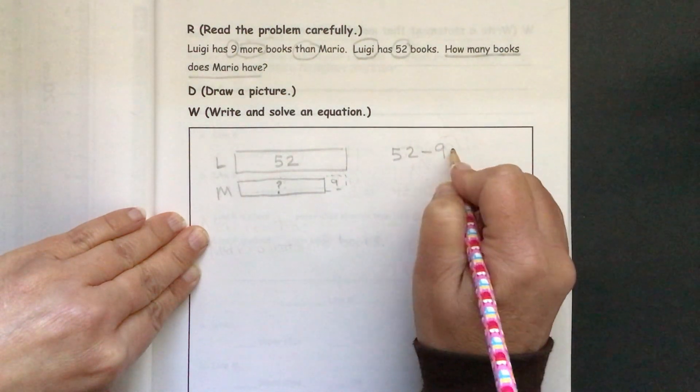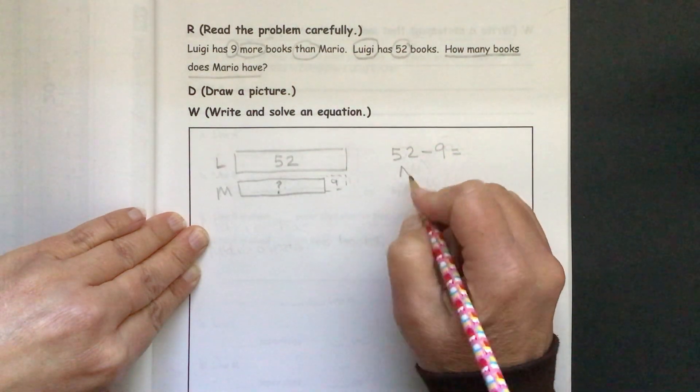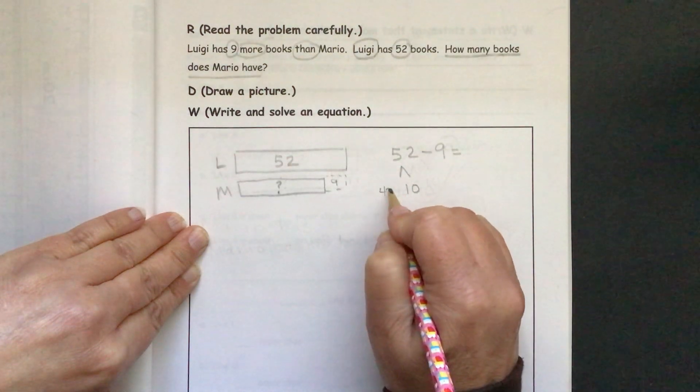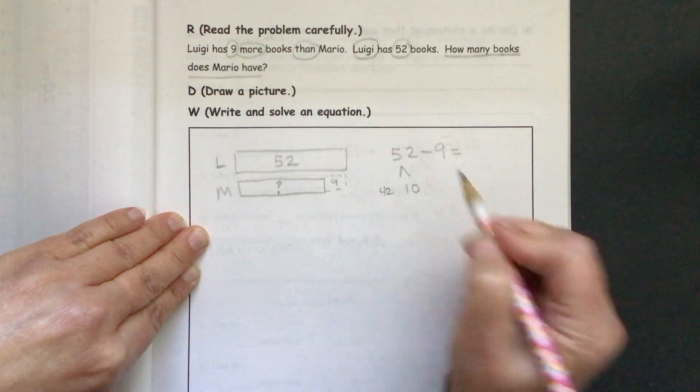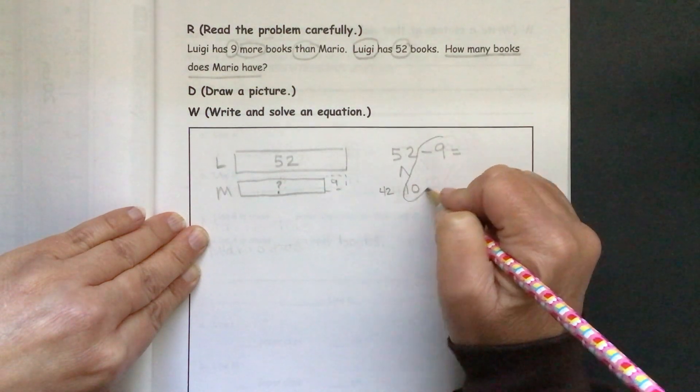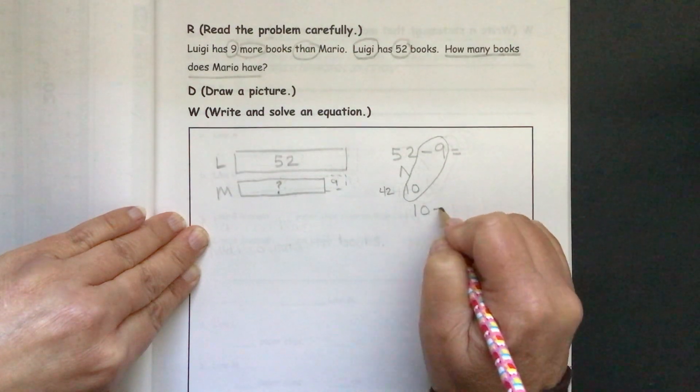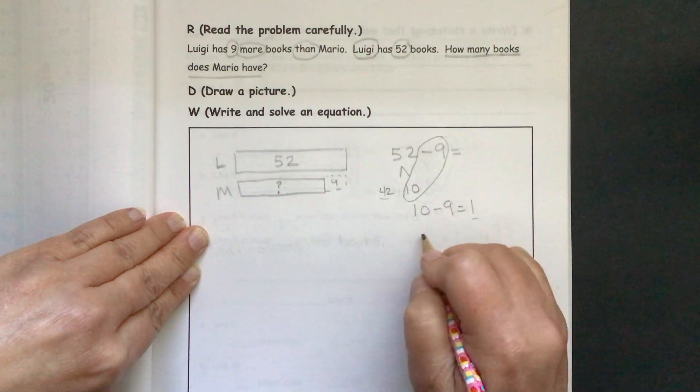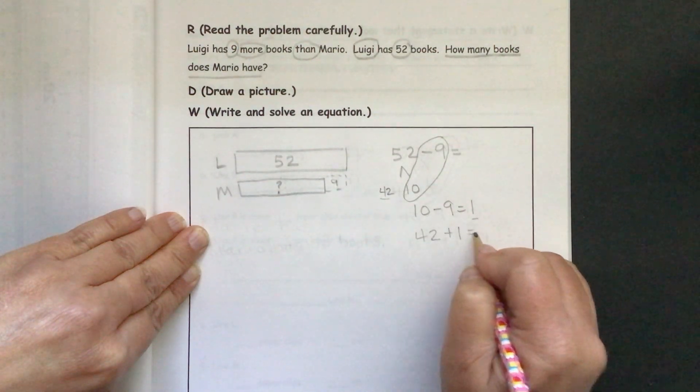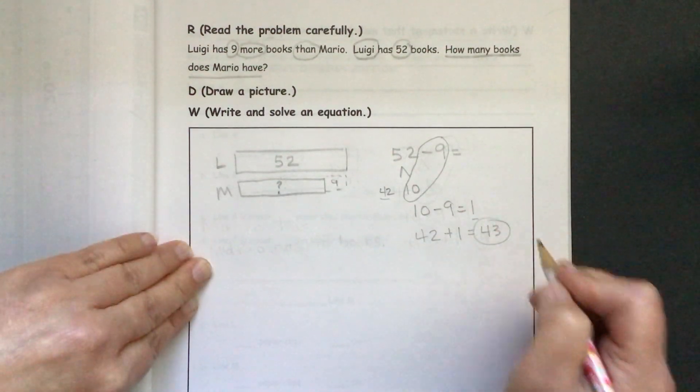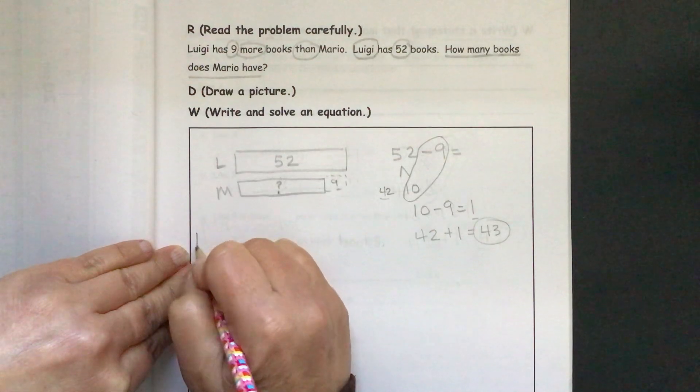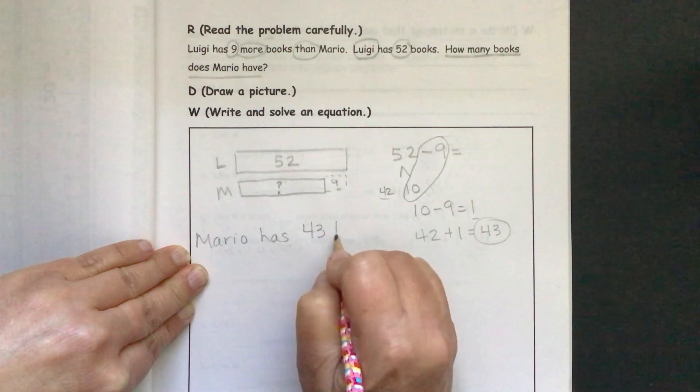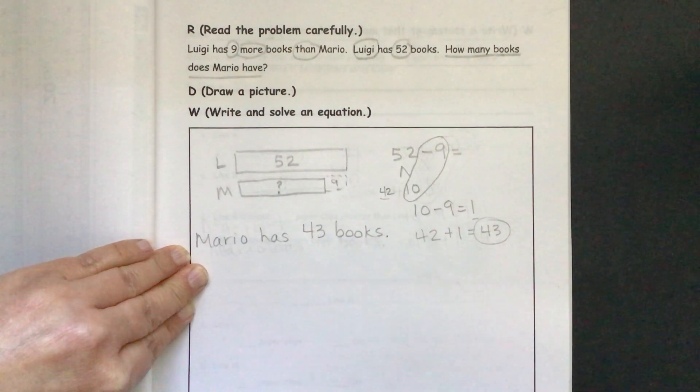We could do our equation: 52 minus 9 equals. We could do our take a 10. If we take 10 from 52, we have 42 left. So 42 plus 10 equals 52. We will do our 10 minus 9 equals 1. And then we have our leftovers. 42 plus 1 equals 43. So then we know that Mario has 43 books.